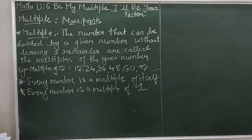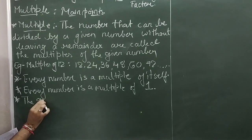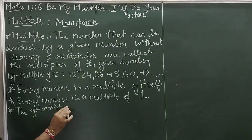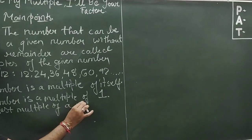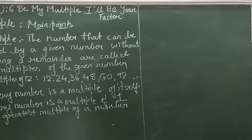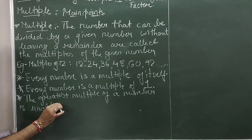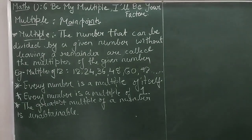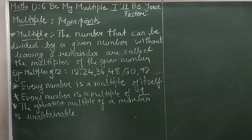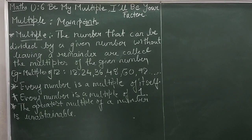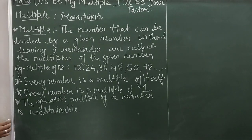Next main point: The greatest multiple of a number is unobtainable. That means we cannot find the greatest multiple of any number. For example, the multiples of 12 go on and on because numbers are infinite, so we cannot obtain the greatest multiple of any number.